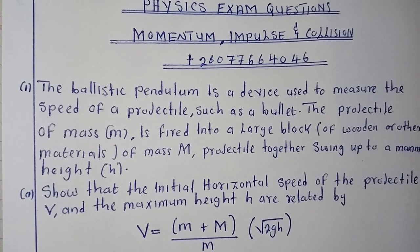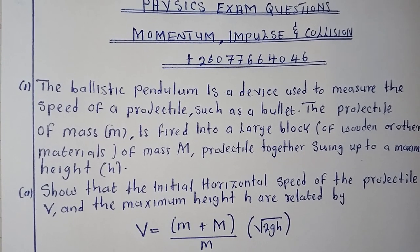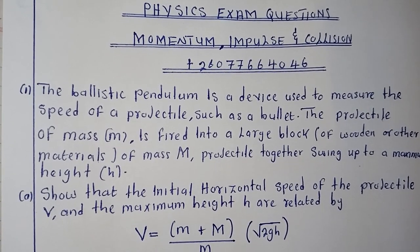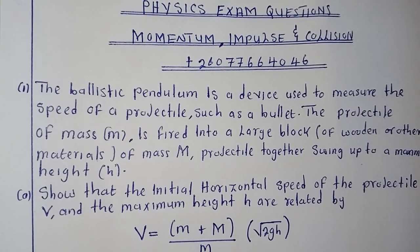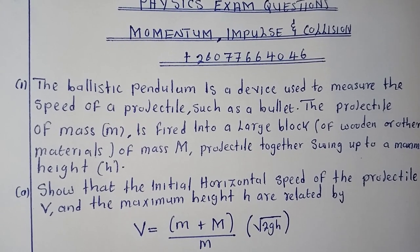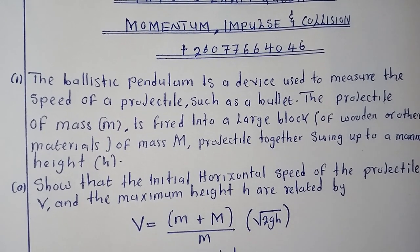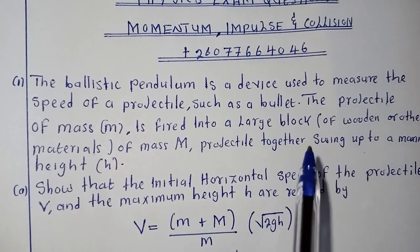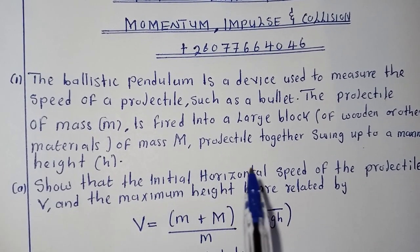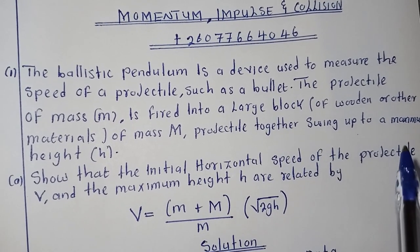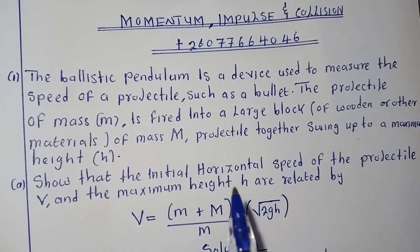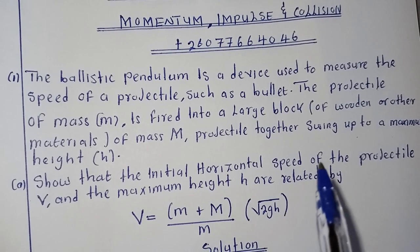If you don't get it, make sure that you inbox me on this WhatsApp line and I'll be able to respond to you. So just a quick one, let's try to get through these questions. The ballistic pendulum is a device used to measure the speed of a projectile, such as a bullet.